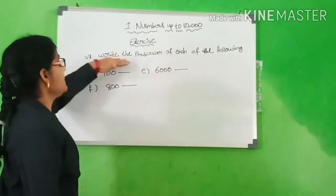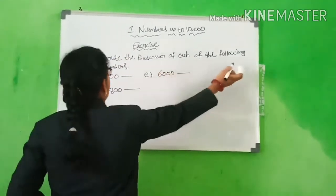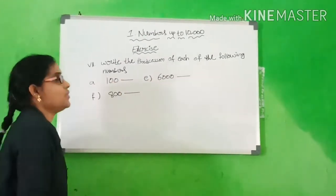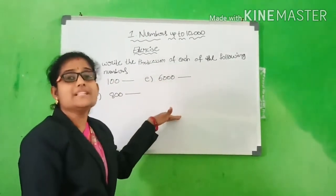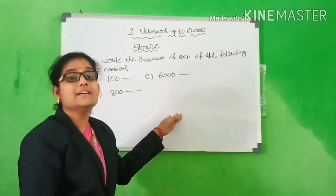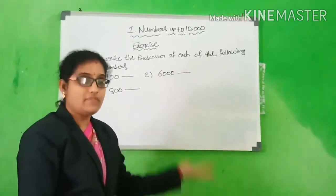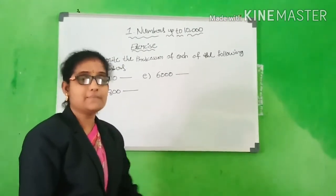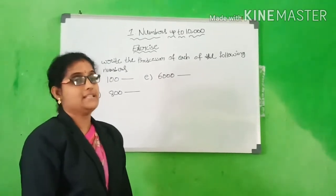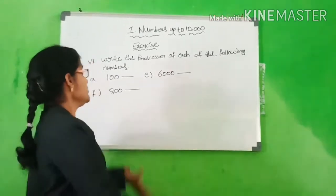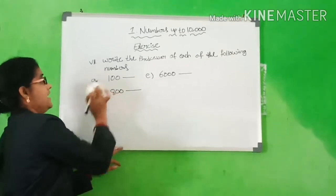Seventh bit: write the predecessor of each of the following numbers. Do you know, children, what is the predecessor? The number just before is the predecessor. Yes. Now you can write these answers.